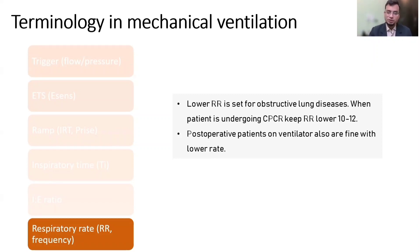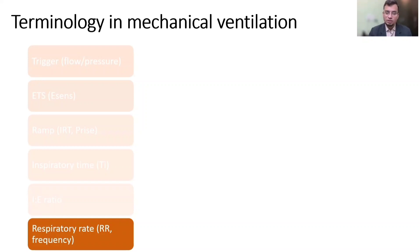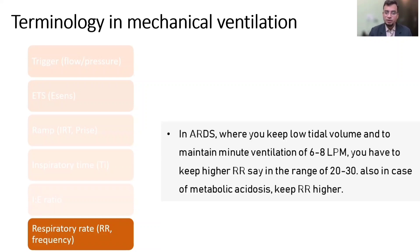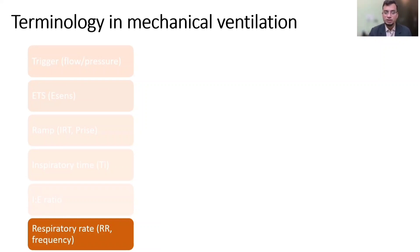Lower RR is set in obstructive lung diseases, during CPR, and in post-operative patients on the ventilator. Higher rates are used in ARDS where lower tidal volume is kept and minute ventilation of 6 to 8 liters per minute must be maintained — RR may be set in the range of 20 to 30 breaths per minute. In cases of metabolic acidosis, RR must also be kept higher; otherwise pH will not be maintained in the normal range.